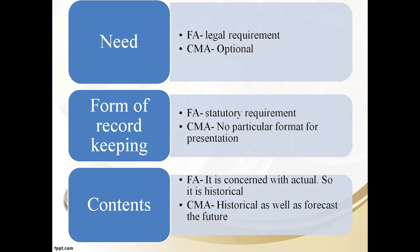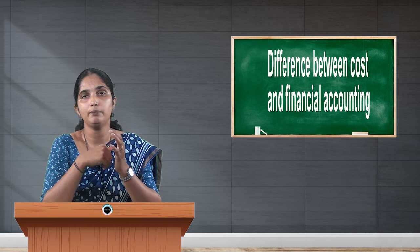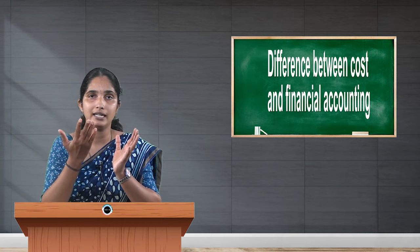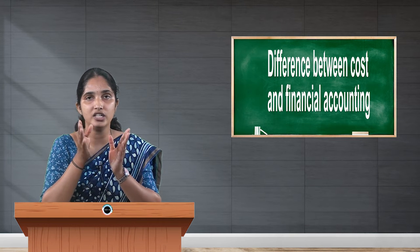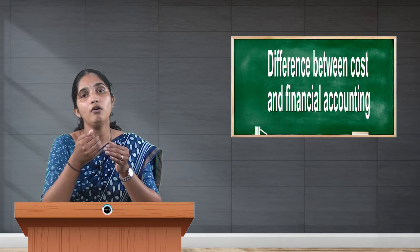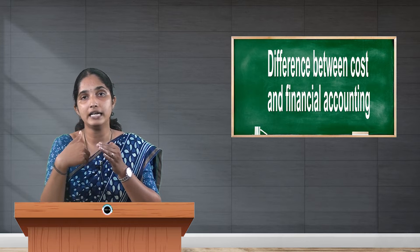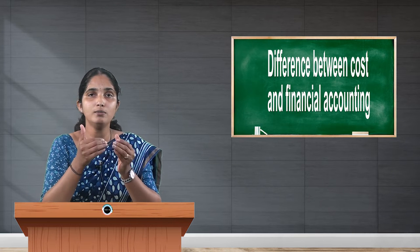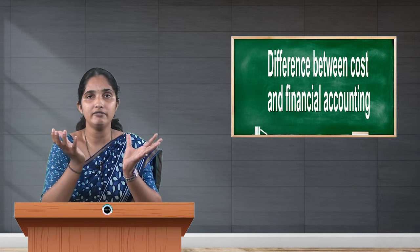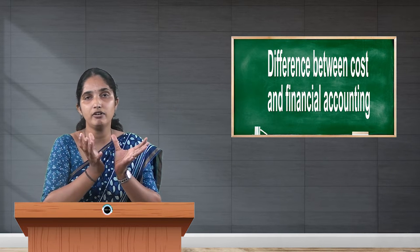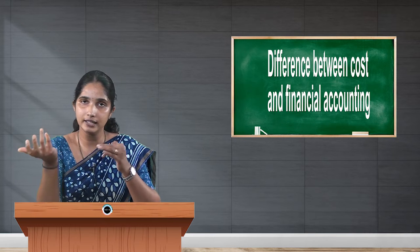The next difference is form of record keeping. Financial accounting has to be prepared according to the set of rules and regulations given by the government. In previous times we used to prepare the balance sheet in a horizontal form; now it is in vertical form. These forms of recording financial information are prescribed by the government.